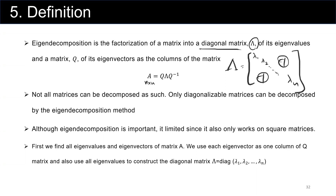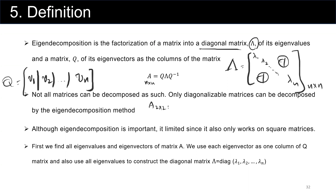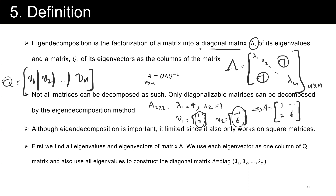Let's say A is n by n; the diagonal matrix is also n by n. The Q matrix includes the eigenvectors — let's call them v sub 1, v sub 2, and v sub n. For example, if matrix A is 2 by 2 with eigenvalues lambda 1 equal to 4 and lambda 2 equal to 1, and eigenvectors v sub 1 = [1, 2] and v sub 2 = [-1, 6], then A equals Q times the diagonal matrix [4, 0; 0, 1] times Q inverse. This is the eigenvalue decomposition.